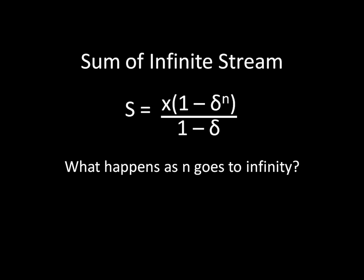And in fact, in the limit, as a number between zero and one goes to infinity, when you raise it to that exponent, that goes to zero. And so you can cancel out that delta to the n entirely, which means that as n goes to infinity, the sum of the infinite sequence of payoffs, that series of payoffs, I should say, is very simple. It's just x over one minus delta.